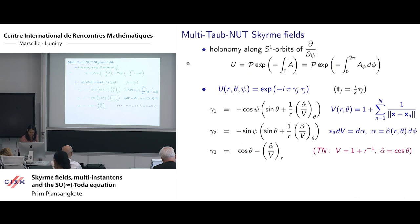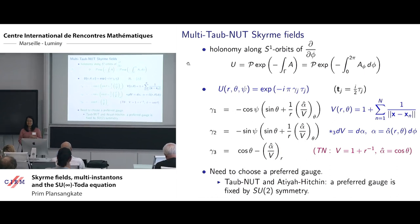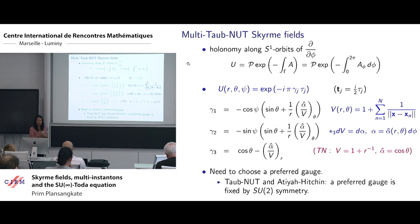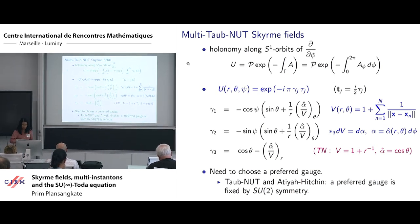With respect to these Skyrme fields, I have to mention that because we calculate the holonomy along S1 orbits which have no points in common, this results in the fact that the Skyrme field is gauge dependent. So there is a need to choose a preferred gauge. For the Taub-NUT and the Atiyah-Hitchin, a preferred gauge is fixed by the symmetry of the metric, but it's not obvious how one can justify a preferred gauge for multi-Taub-NUT Skyrme fields.